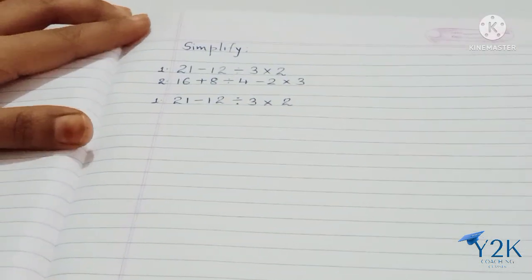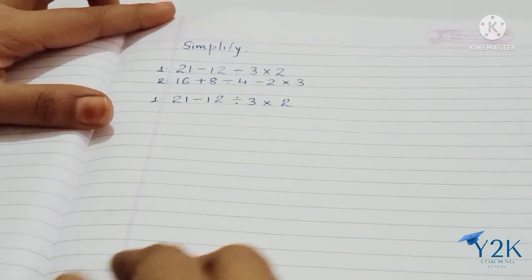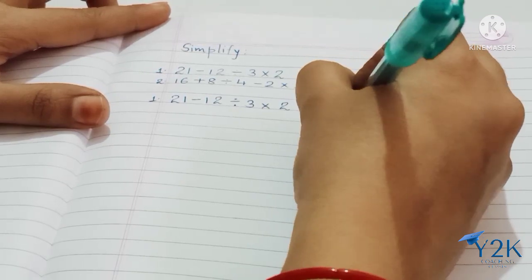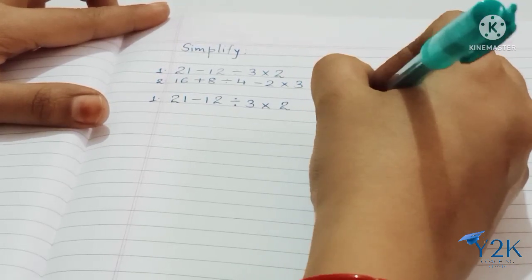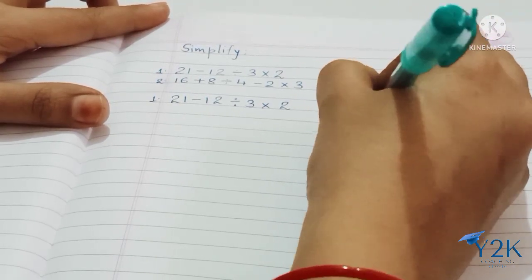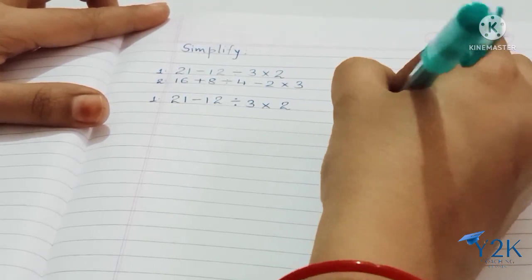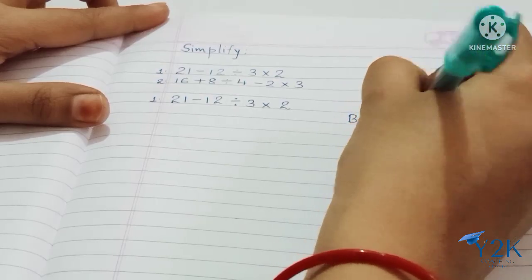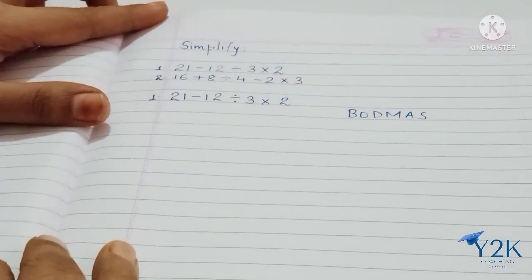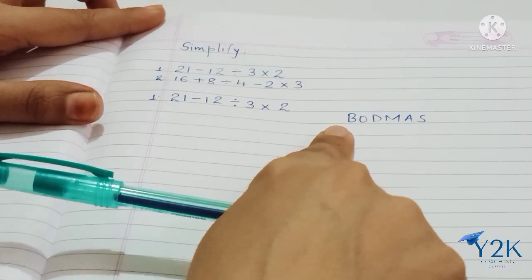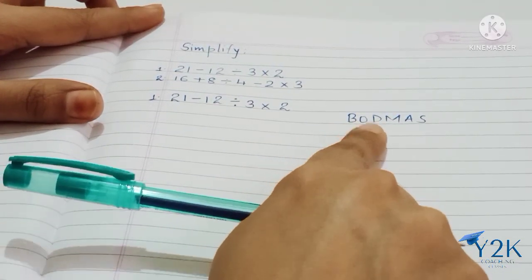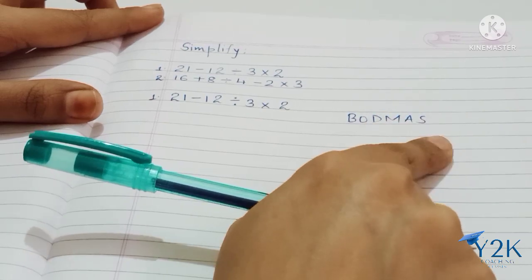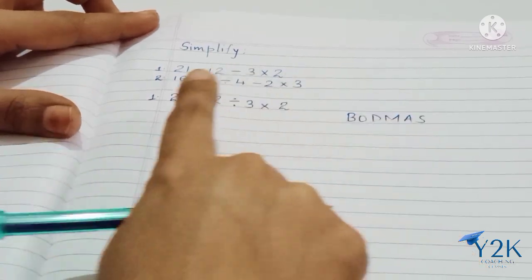To simplify this, we are going to use the rule BODMAS. We are going to do it by BODMAS here: Brackets, Open, Division, Multiplication, Addition, and Subtraction.